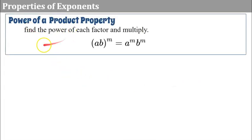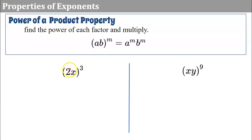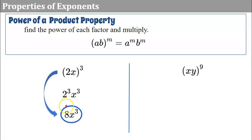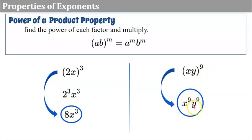Now we have the power of a product property: find the power of each factor and multiply — think of it as distributing the exponent. For example, with two x cubed, we raise each factor: two cubed times x cubed. Two cubed is eight, so the simplified answer is eight x cubed. For x times y raised to the ninth power: distribute the exponent to get x to the ninth times y to the ninth. Remember, to be in simplest form you must clear the parentheses.